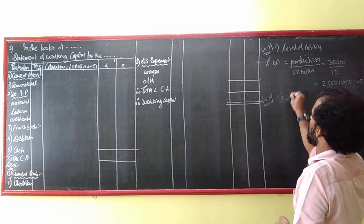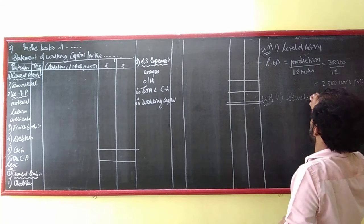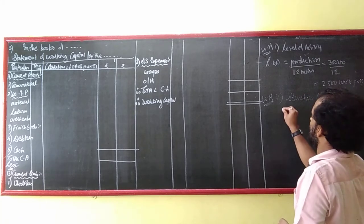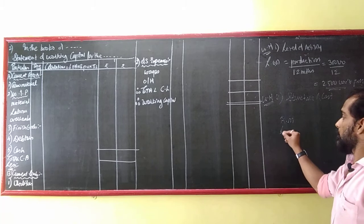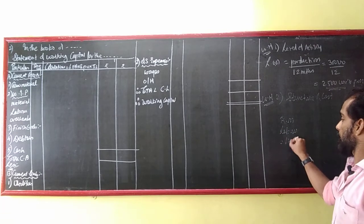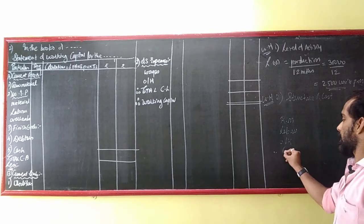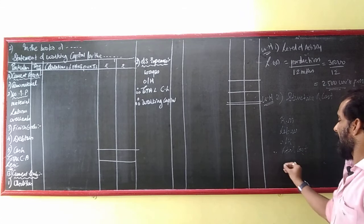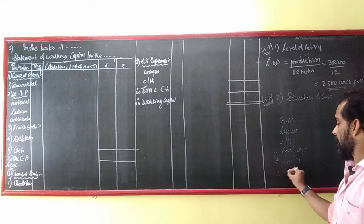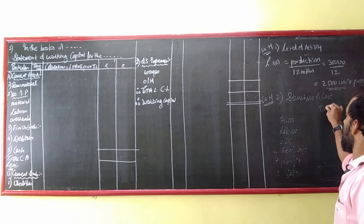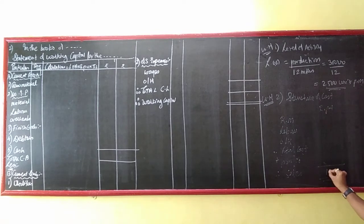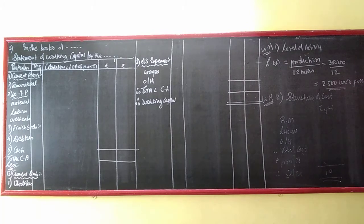Working Note number 2: Structure of Cost. To produce anything you need raw material, plus labor, plus overheads — that gives total cost. Add profit and you get the selling price. Selling price is 10. Material is 60% of selling price, so 60% of 10 equals 6.